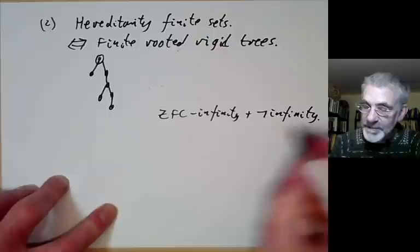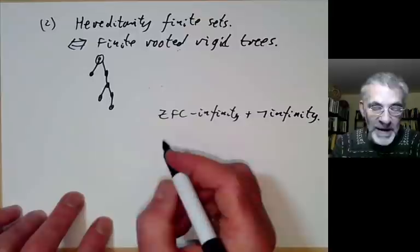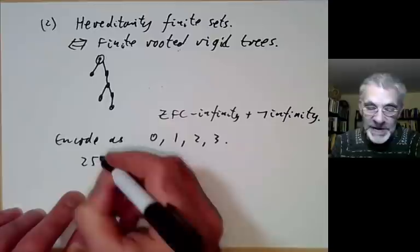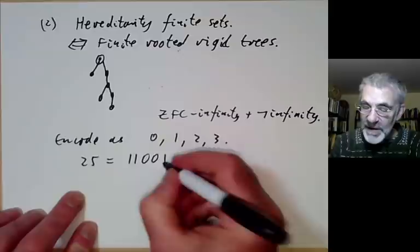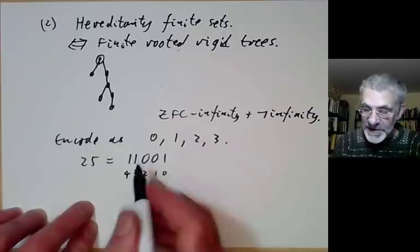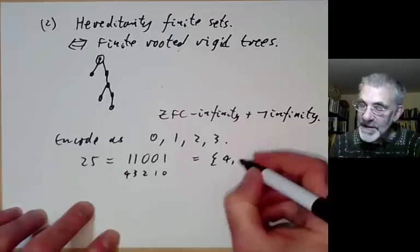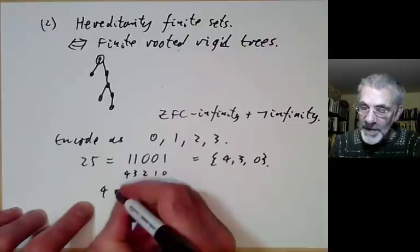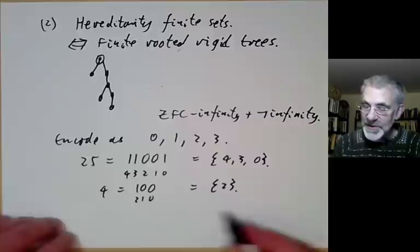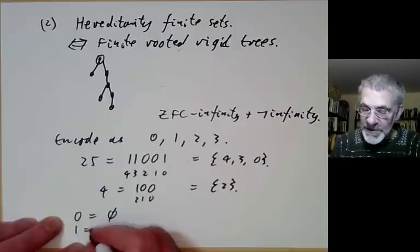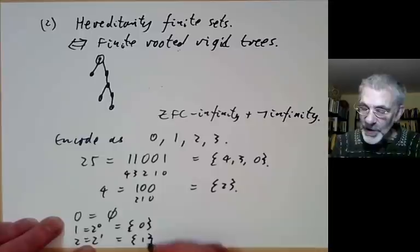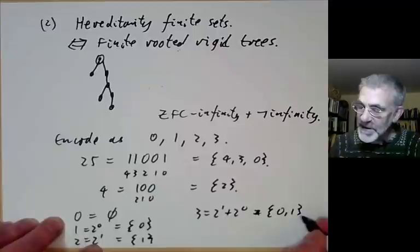There's a neat way of encoding finite rooted rigid trees found by Ackermann: we can encode these as non-negative integers. You fix a non-negative integer, say 25, and write it in binary: 0011001. Looking at the binary positions, there's a 1 in positions 4, 3, and 0. So 25 corresponds to the set containing three elements: 4, 3, and 0. Similarly, 4 written in binary gives that 4 is the set containing just one element: 2. Starting from the beginning, 0 is the empty set, 1 is 2^0 so it's the set containing just 0, 2 is 2^1 so it contains {0, 1}, and so on.